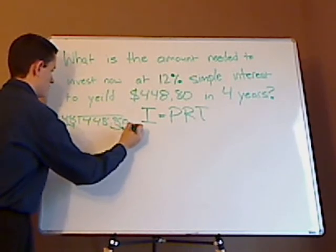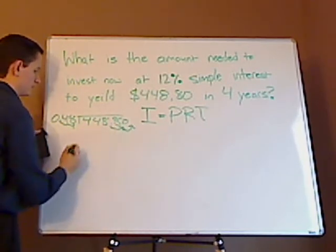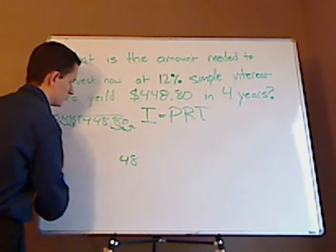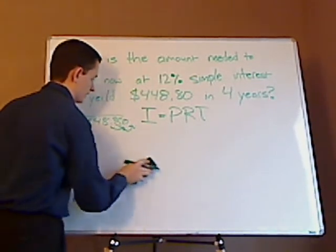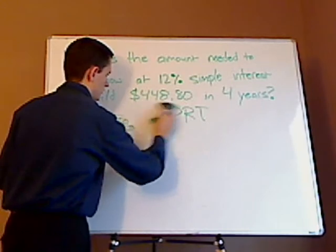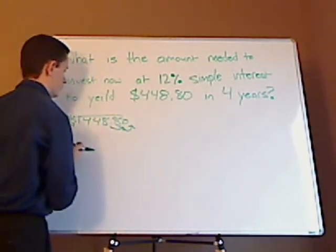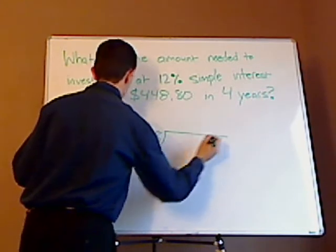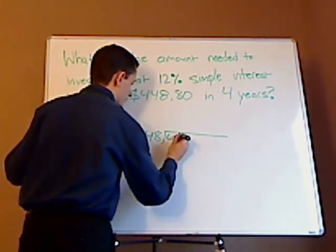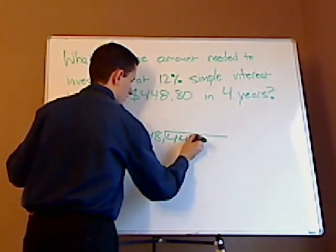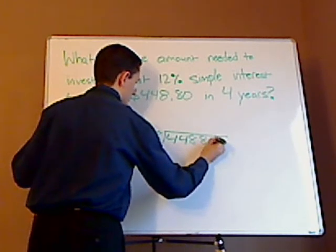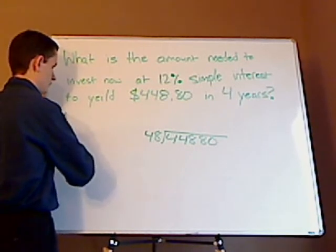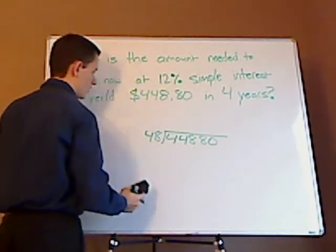Whatever I do here, I have to do here. So, this becomes 48. I'm going to erase this work so I have more room for the long division. It's 48 divided into 44,880.